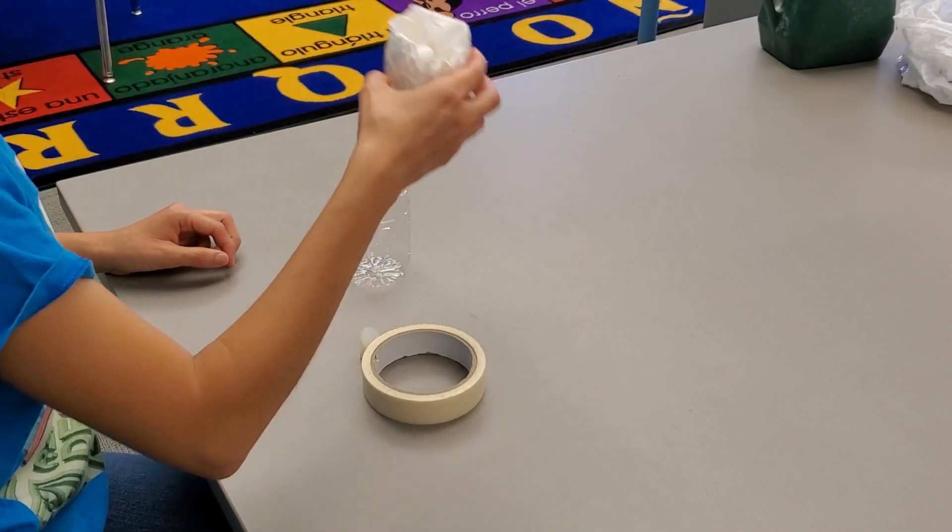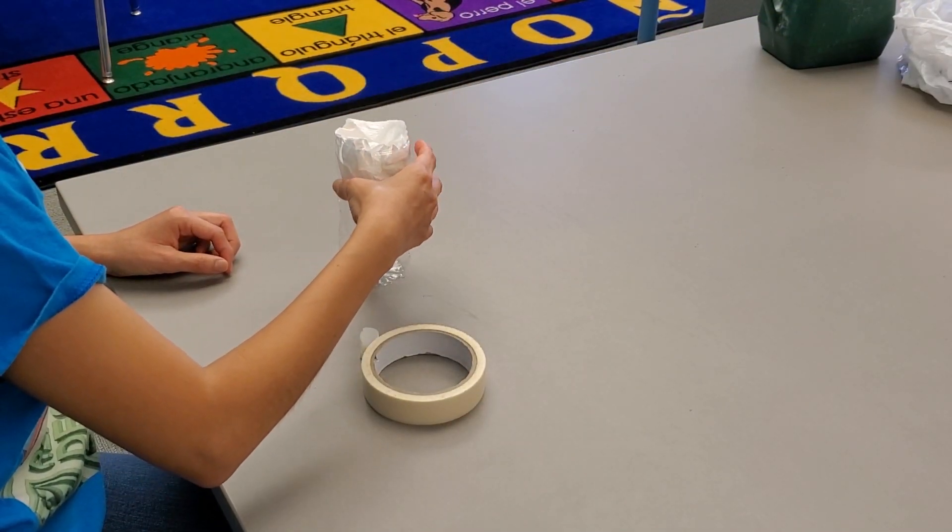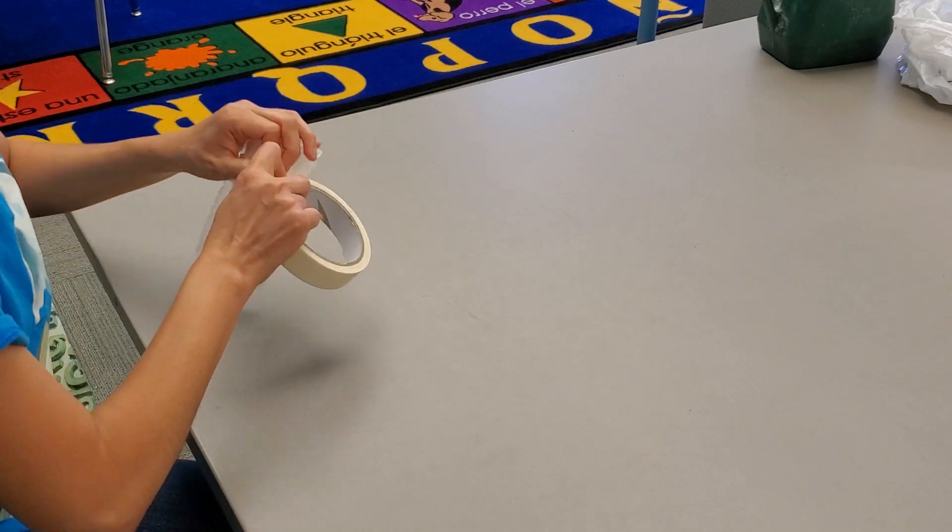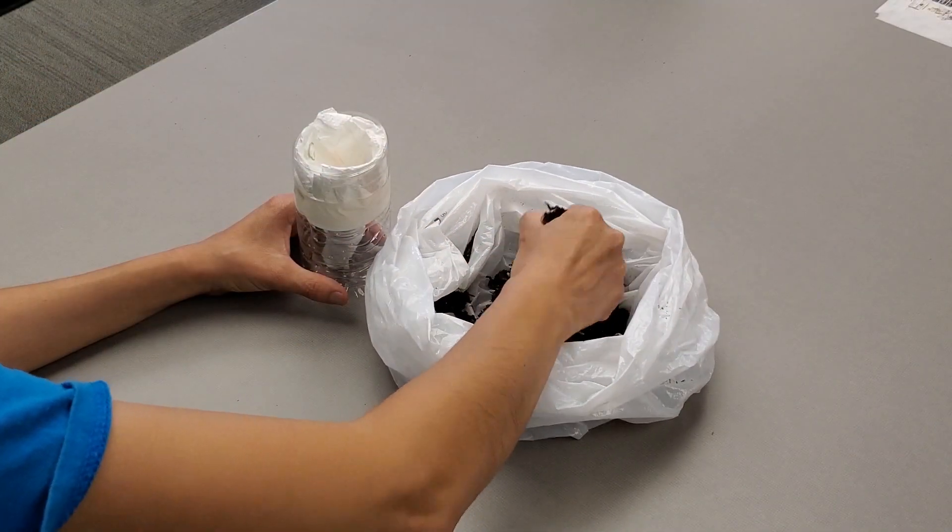Next, you want to place your funnel on the bottle and secure it with tape. Now we'll add soil.